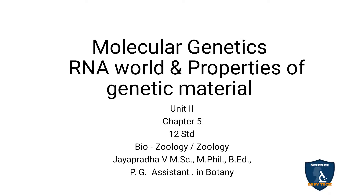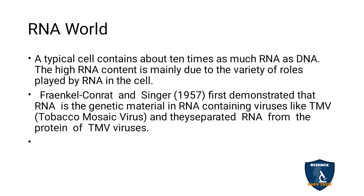Today our topic is RNA world and properties of genetic material in molecular genetics unit, chapter 5. We have seen in the previous class DNA as genetic material and the chemistry of nucleic acids. Now we are going to see the RNA world. A typical cell contains about 10 times as much RNA as DNA. The high RNA content is mainly due to the variety of roles played by RNA in the cell.